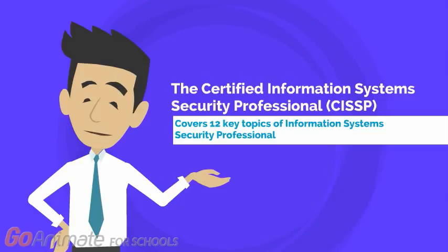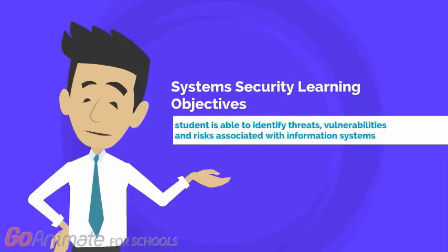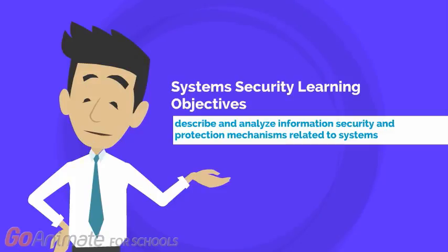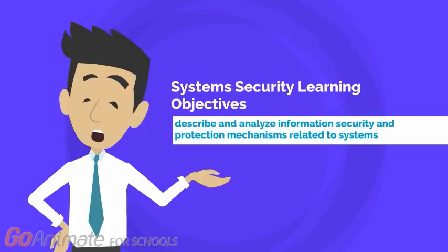You can click a topic to see an overview and objectives. After finishing the study unit, the student is able to identify threats, vulnerabilities, and risks associated with information systems. Also, describe and analyze information security and protection mechanisms related to systems.